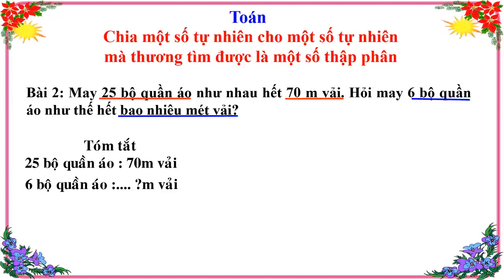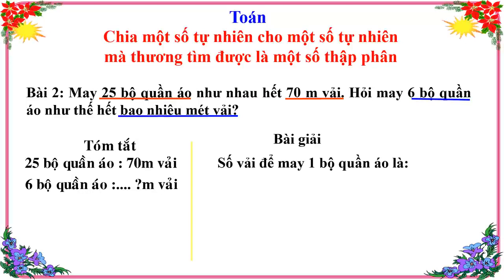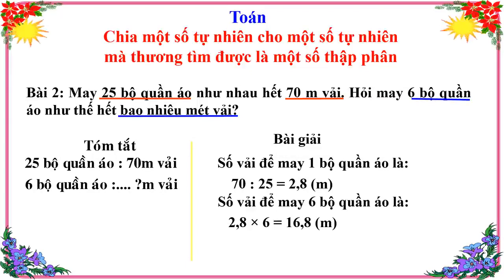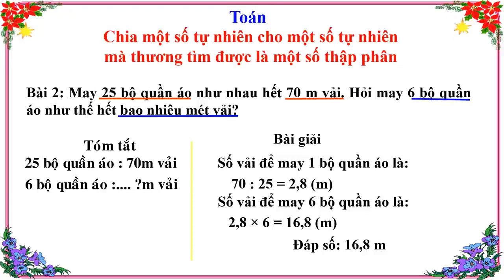Các em đã hoàn thành bài tập rồi, bây giờ hãy hướng lên màn hình cùng sửa bài. Bài giải: Lời giải 1 — Số vải để may 1 bộ quần áo là: 70 ÷ 25 = 2,8 mét. Lời giải 2 — Số vải để may 6 bộ quần áo là: 2,8 × 6 = 16,8 mét. Đáp số: 16,8 mét. Thầy chúc mừng những bạn có kết quả đúng; bạn nào chưa đúng thì cố gắng giải lại.